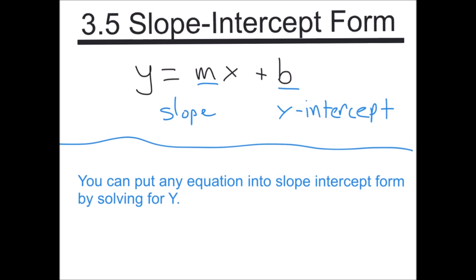You can take an equation of a line and write it in several different forms, the most useful of which is the slope-intercept form. This is the form right here: y equals mx plus b. It's very useful because it gives us a lot of information about the line, and it's also very easy to graph from that form.